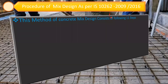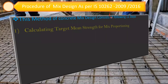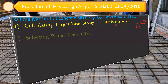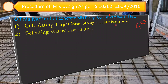Step one is calculating the target mean strength of the mix proportion. For example, if you want to prepare M40 grade concrete, 40 N/mm² is your target. Step two is selecting the water-cement ratio to achieve this — it may be 0.30, 0.35, 0.40, and so on.